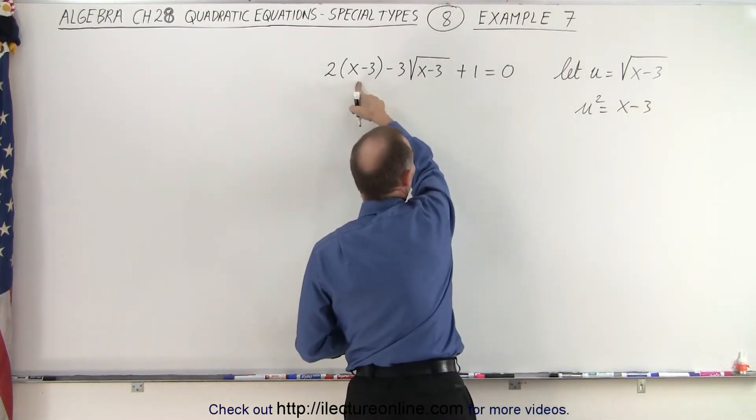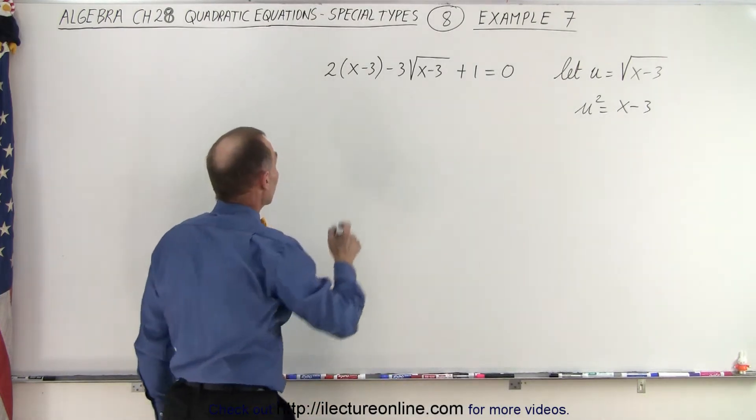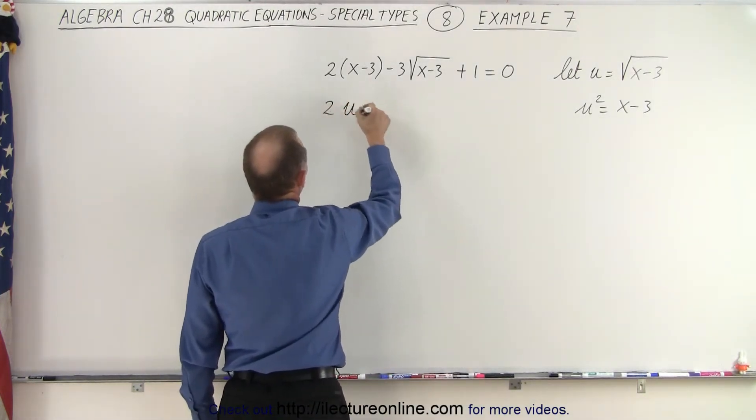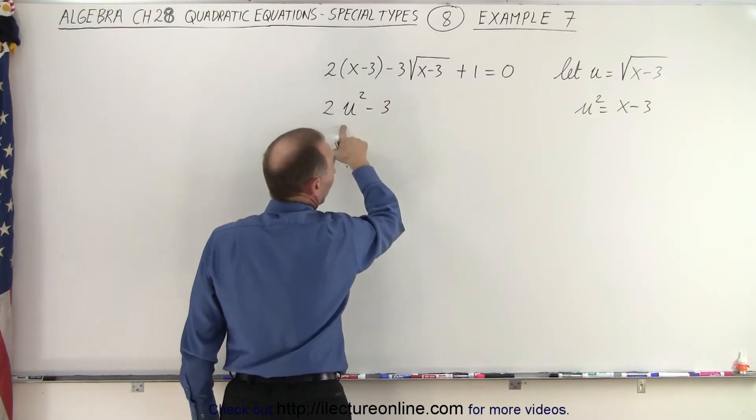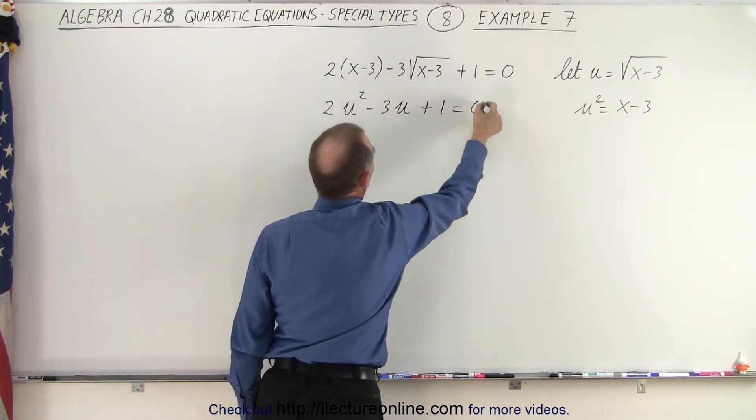Notice we can replace this with u squared and this with u. And then we have a regular quadratic equation. So 2u squared minus 3 times u plus 1 equals 0.